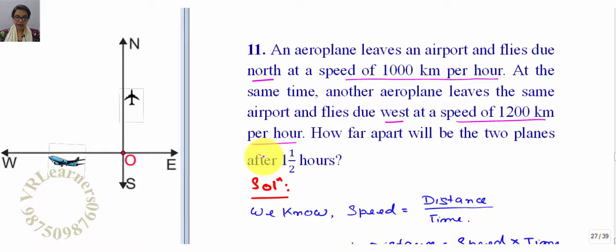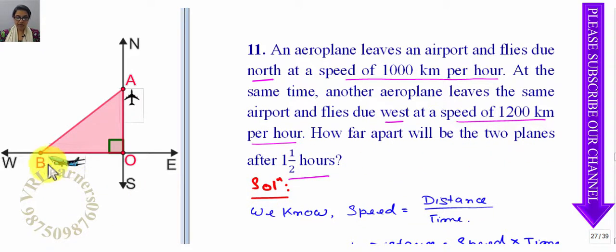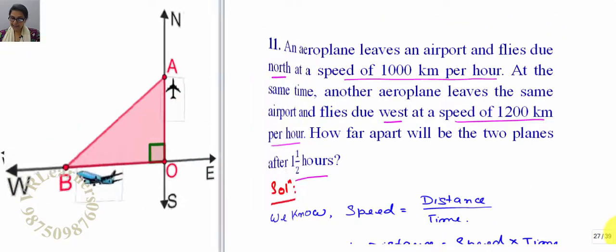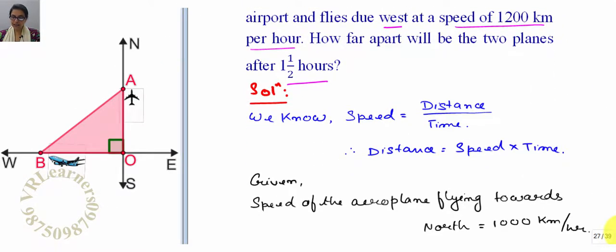Now here we have to find how far apart will be the two planes after one and half hours. That means one and half hours, we have to find these two flights distance. We know that speed means distance by time, so distance equals speed into time.